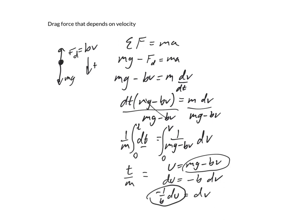So, moving on to the next page here, we have t over m still on the left-hand side. And we have the integral of 1 over u, du, and we have a negative 1 over b out front there.